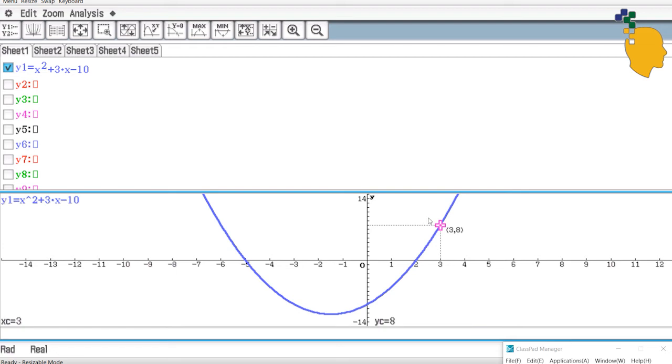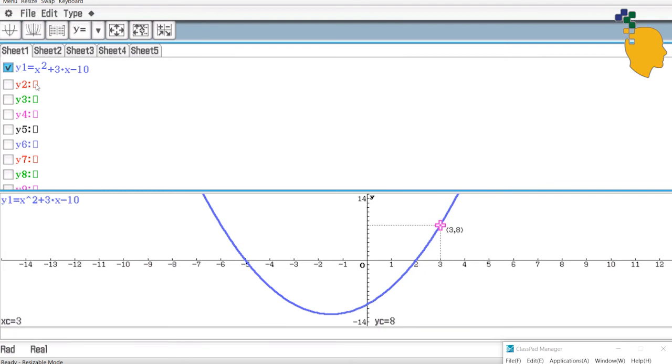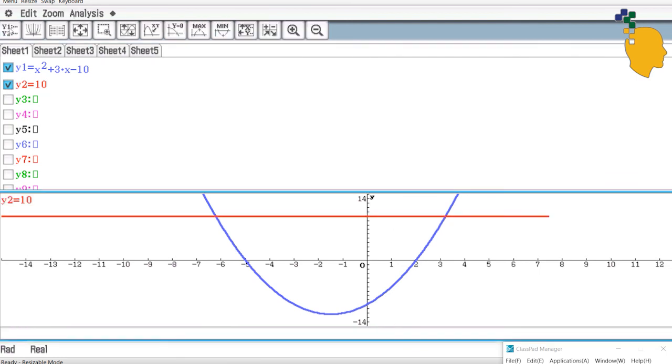And now let's try to find the x-values when y equals 10. This can't be found using the trace function. So all you have to do is add another graph. Right next to y2, type 10. So you'll sketch a graph when y equals 10. Make sure you click on the checkbox and click onto the parabola icon and it'll sketch the horizontal line for you.